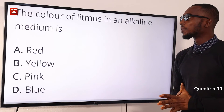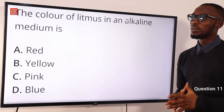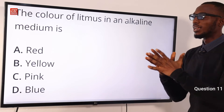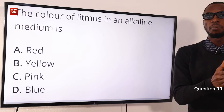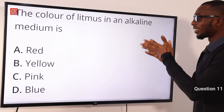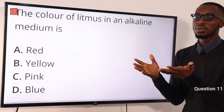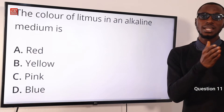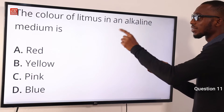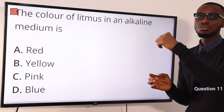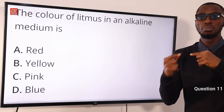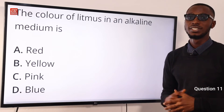Number 11. The color of litmus in an alkali medium is what? An acid turns blue litmus paper red, while an alkali turns red litmus paper blue. So if you are dipping red litmus into an alkali medium, the color is going to change to blue. The correct answer is option D.